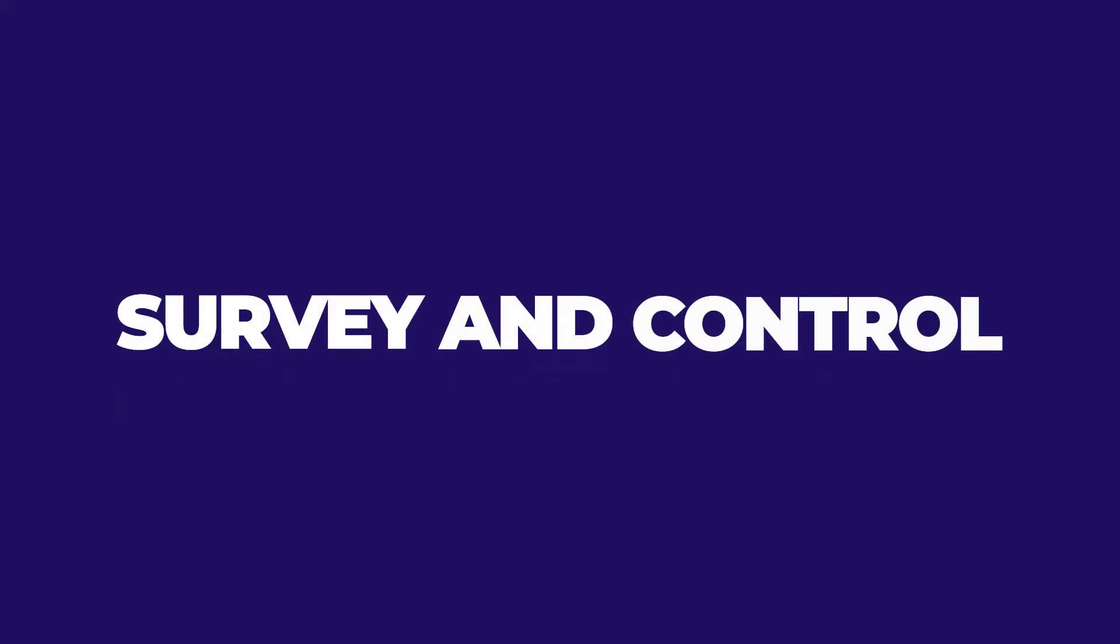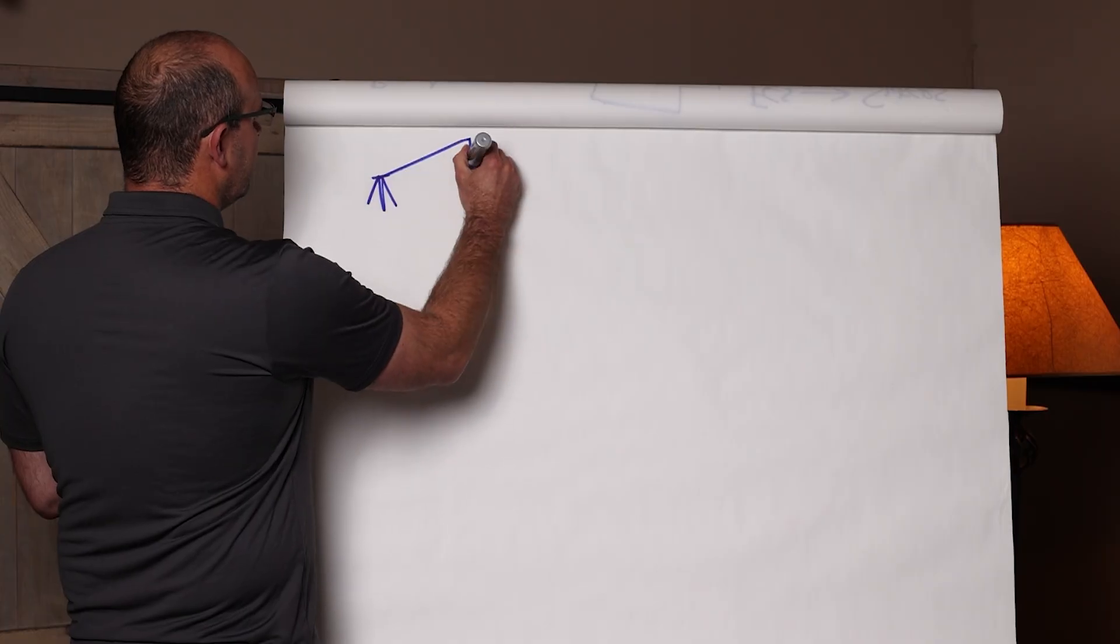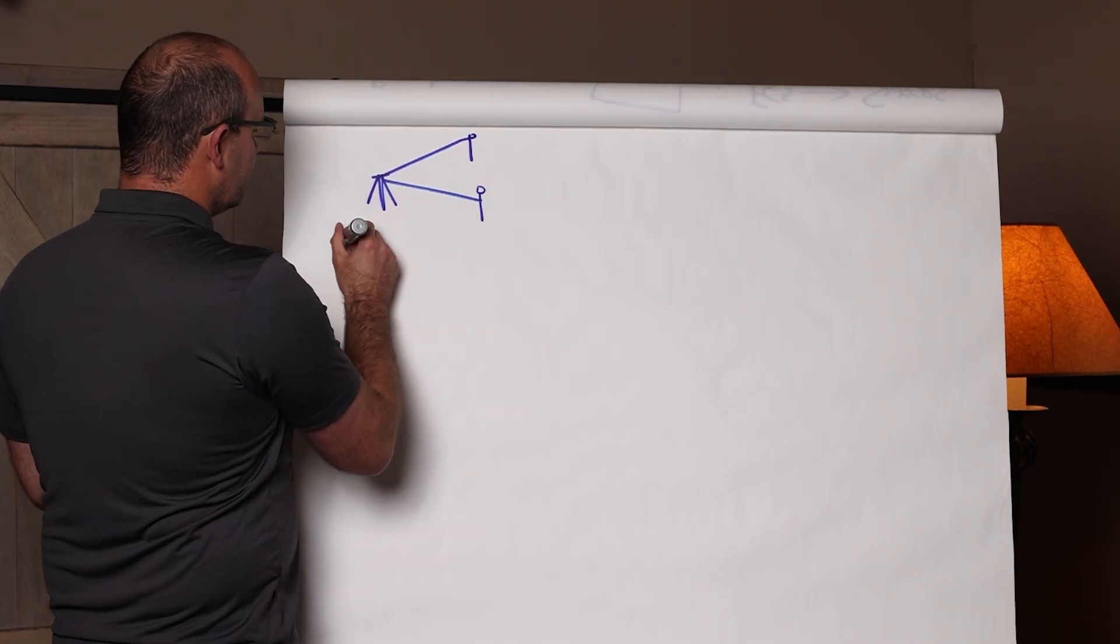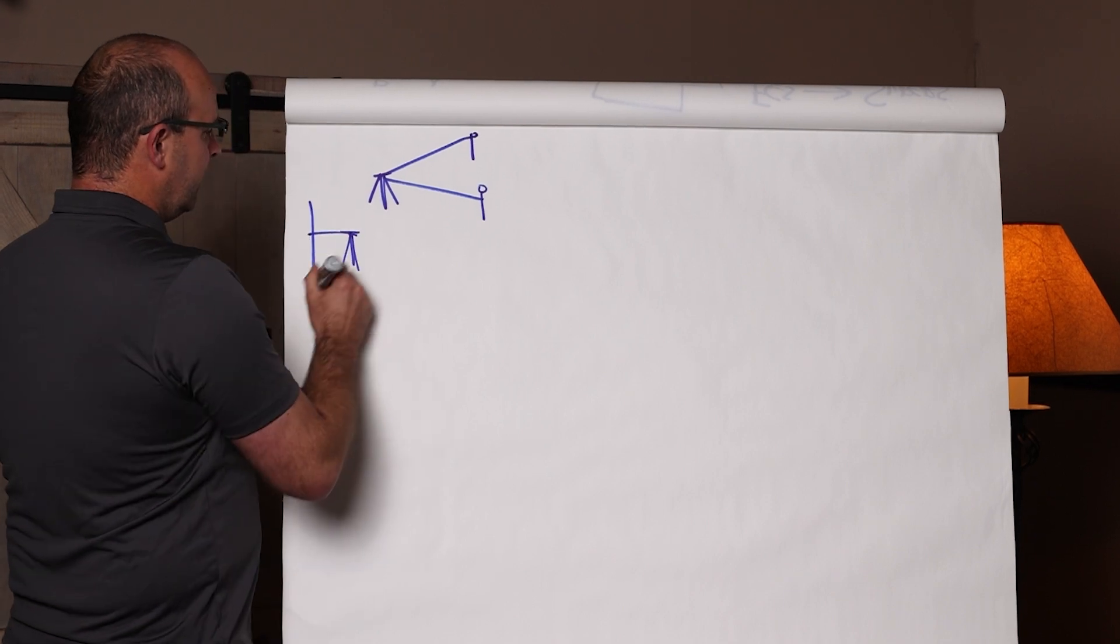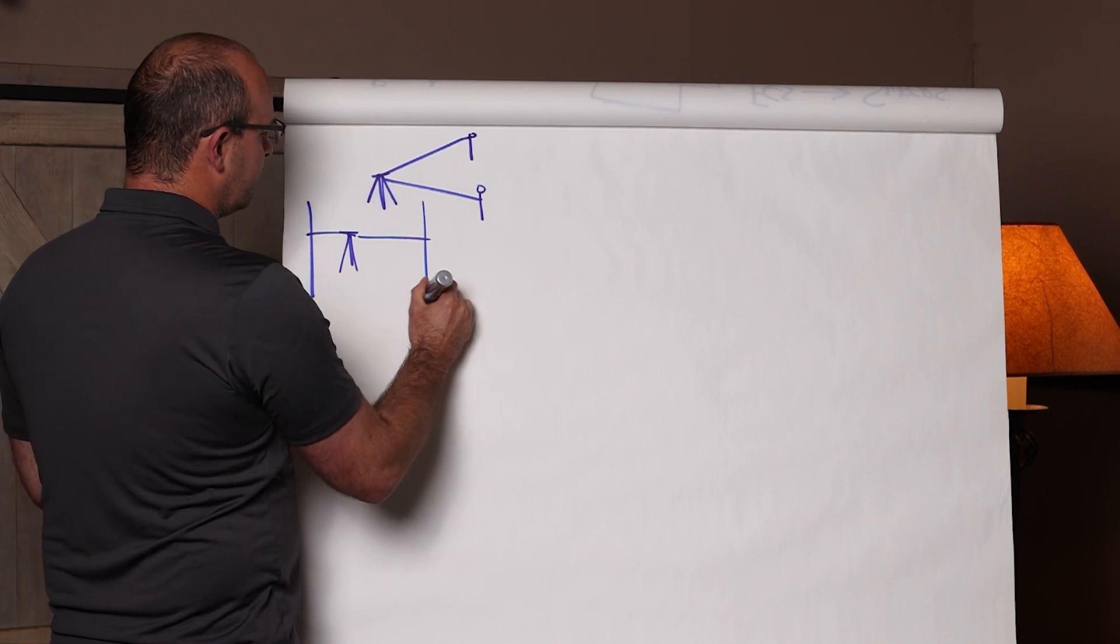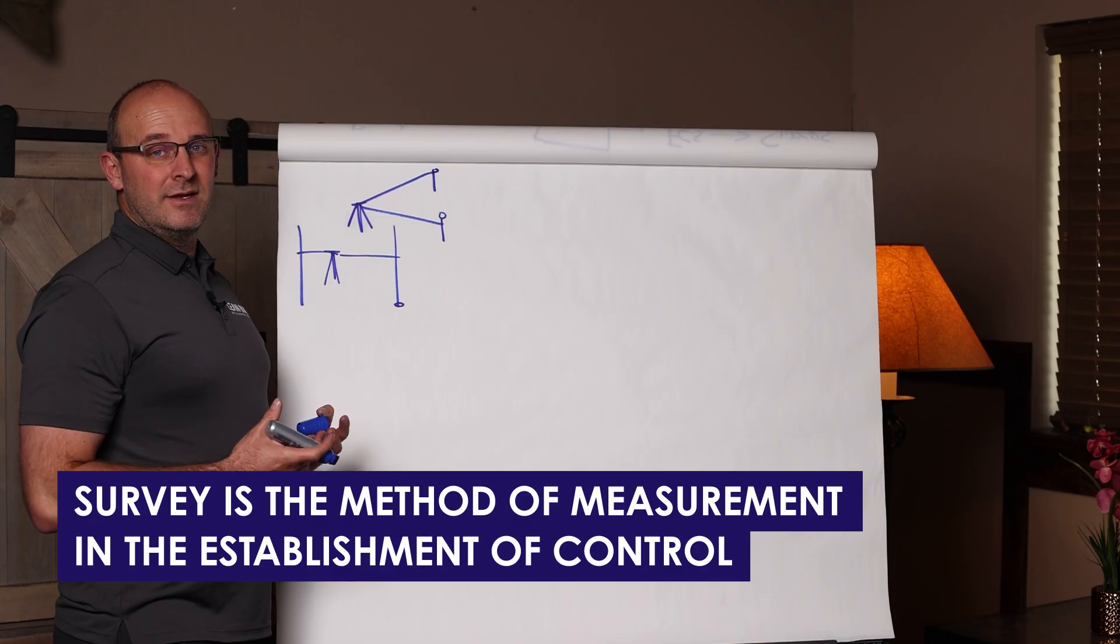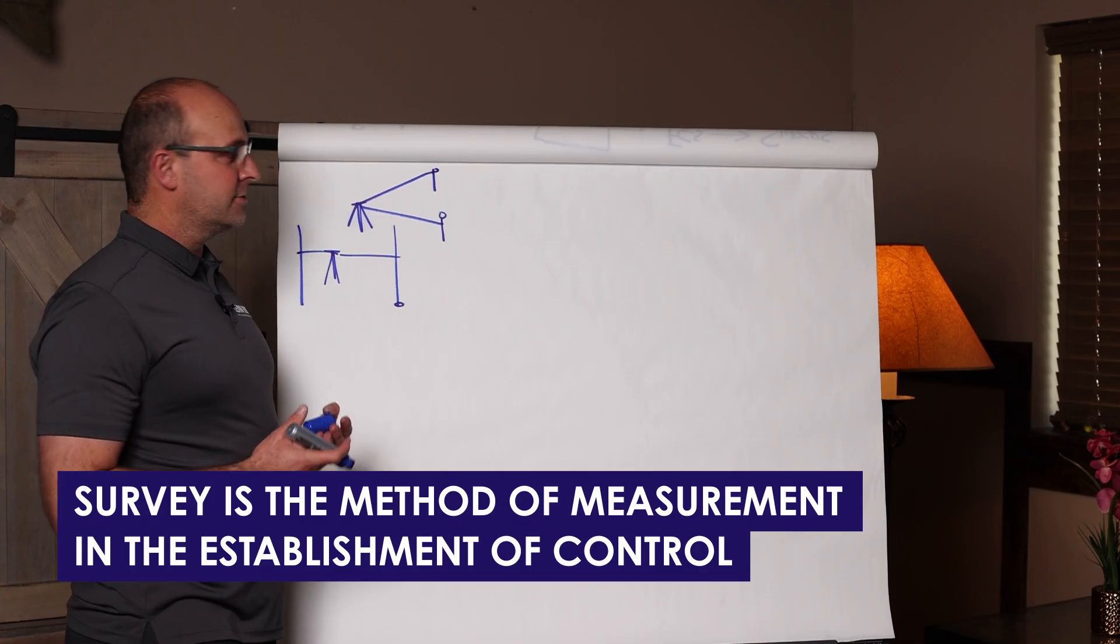So let's talk about survey and control. Typically when I think about survey, I'm thinking about picking up a backsight and shooting a foresight or maybe it's an automatic level and we're picking up a benchmark and shooting an elevation. That's survey. It's the method of measurement and the establishment of control.